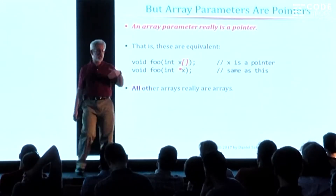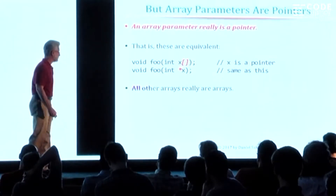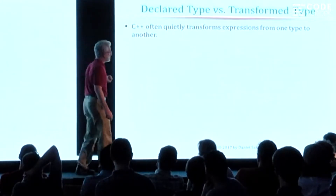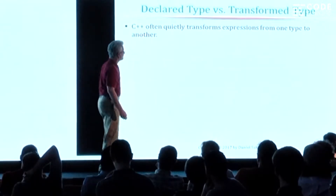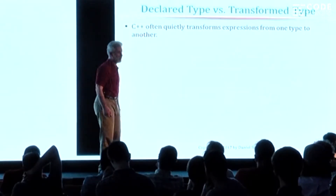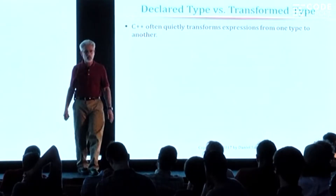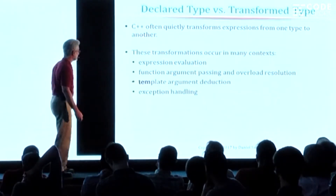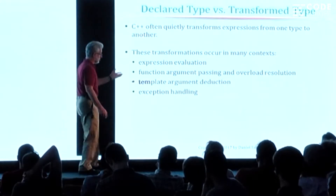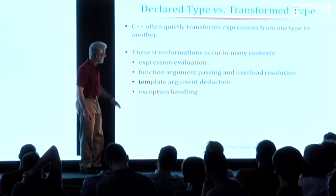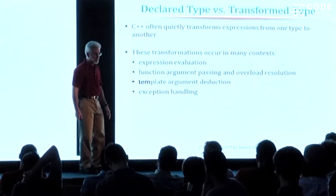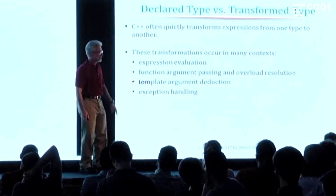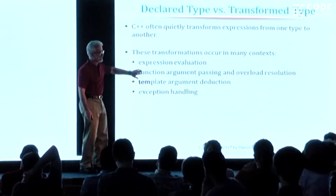So that's the example I wanted to use to motivate this. Here's the general lesson I want to cover: C++ often quietly transforms expressions from one type to another. And it will happen in a variety of different settings — for example, when you're evaluating expressions, when you're passing arguments to functions, especially when there's overload resolution.